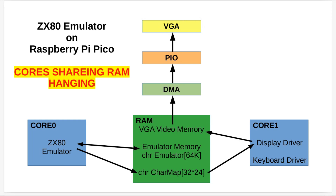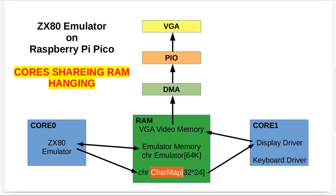At one stage I even tried the synchronization mechanisms in the C SDK itself — things like semaphores and other signaling processes for indicating when it's safe to read from memory when both cores aren't accessing it. But those are really for cases where both cores want to write to the same memory. Since core one was only reading, there shouldn't have been any contention or hanging.